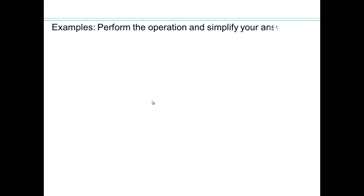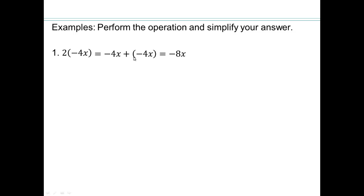Let's start with examples. Perform the operation and simplify: 2 times negative 4x. Two copies of negative 4 added together gives you negative 8x.